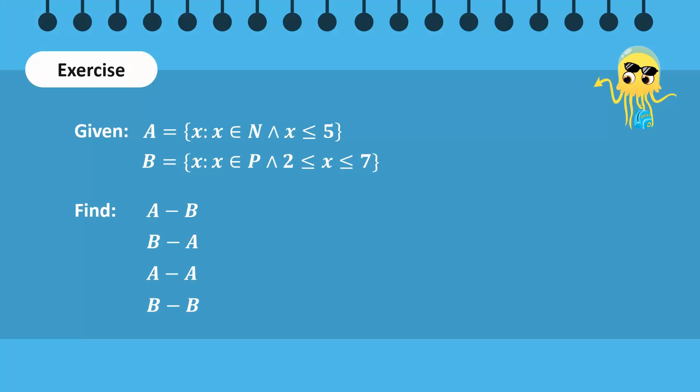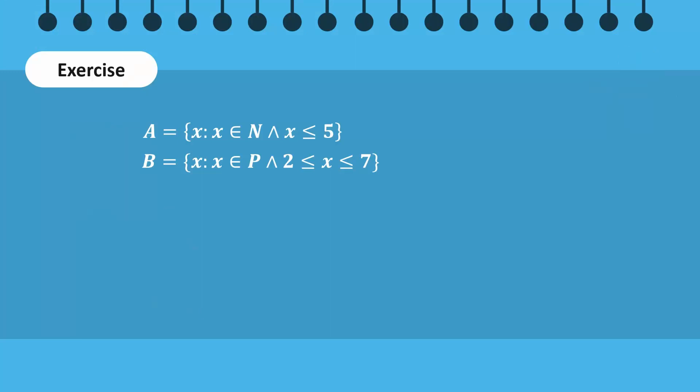Now, try to solve this problem. Let's solve it. Set A contains natural numbers that are less than or equal to 5, so its elements are 1, 2, 3, 4, and 5. Set B contains prime numbers that are between 2 and 7, both inclusive, so its elements are 2, 3, 5, and 7.